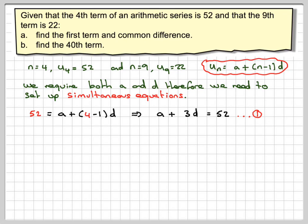In the second case, you've got 22 = a + (9-1)d, because it's the 9th term. And that simplifies to a + 8d = 22. We call that equation 2.